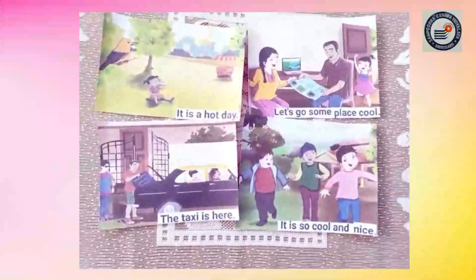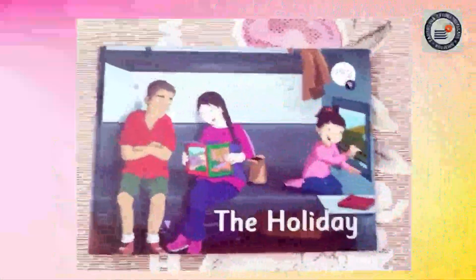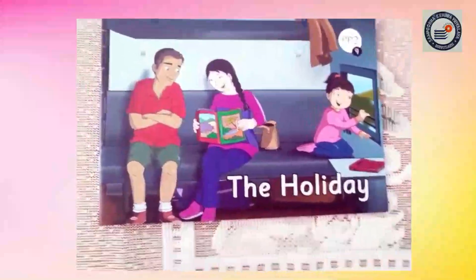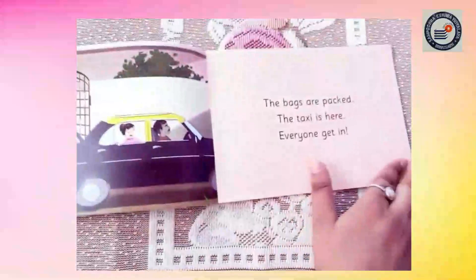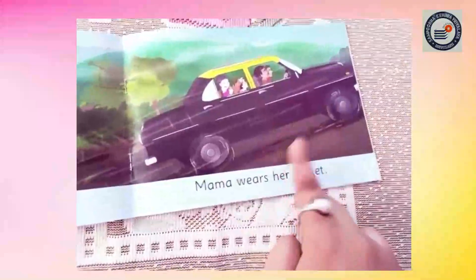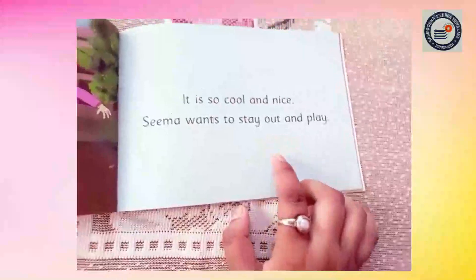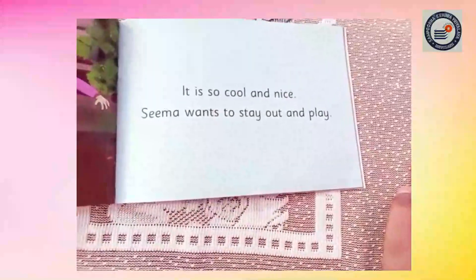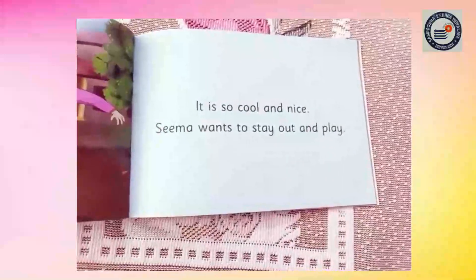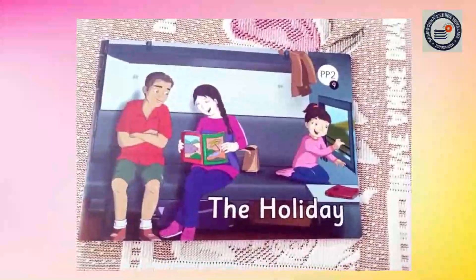I hope you all were able to place the sentences and pictures in the right order. Now I have a fun activity for you. All of you have read up to this page, so today you will start reading from this page, then read this page and this page. These three pages are your home fun activity for today. All of you read it and send it to me. Children, that's all for today. We will see you in our next class. Take care. Bye.